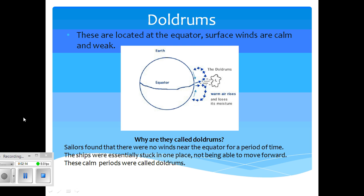So, let's begin by talking first about the doldrums. Now the doldrums are located at the equator. And these surface winds are generally calm and very mild.